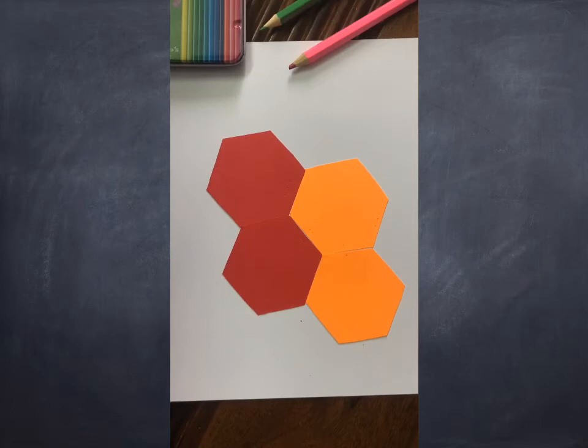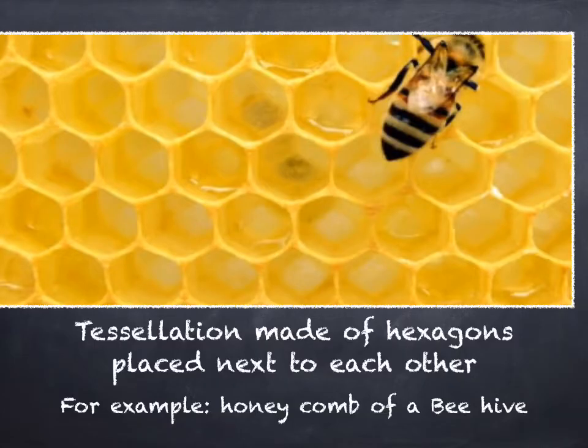Now I repeat the same method using hexagons, and we can see that this also fills the space completely. As you can see, there are no gaps or overlaps. This is something we get if we put hexagons next to each other.